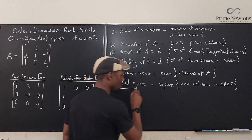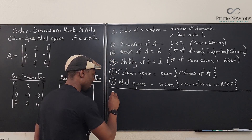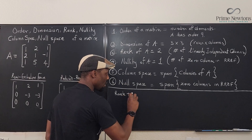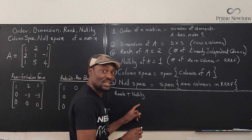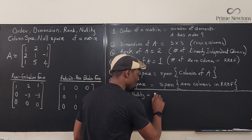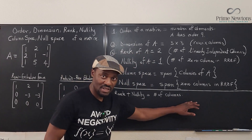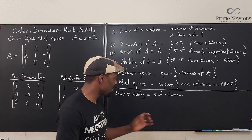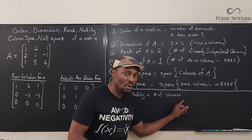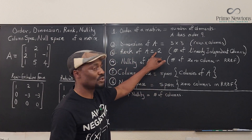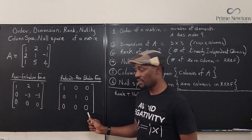Let's put some key facts here. Number one: the rank of A plus the nullity of A is always equal to the number of columns of the matrix. So if the rank is two and the nullity is one, you expect three columns total. Think of it like a room with three people: two are real, one is a ghost.